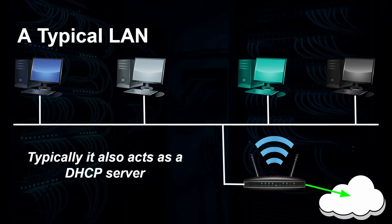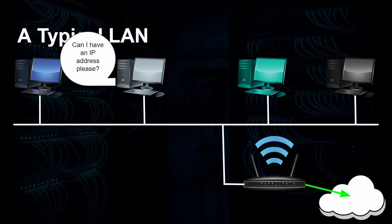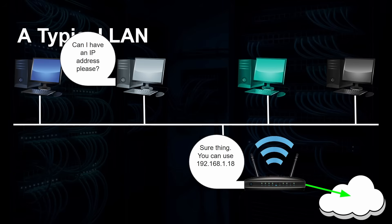So it works like this: a client you just switched on says, can I have an IP address please? And the DHCP server on the modem/router says, sure thing, you can use 192.168.1.18. It keeps track of all the addresses it's given out, it knows the state of the network, and knows what address it can give out. You can also configure it to change the range or give out permanent ones.